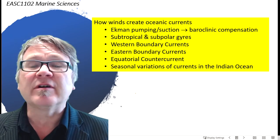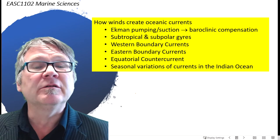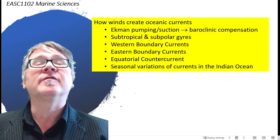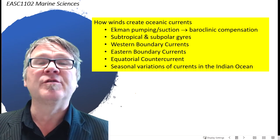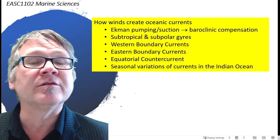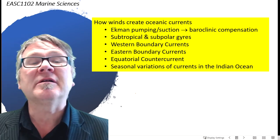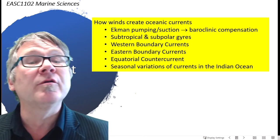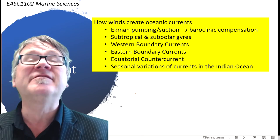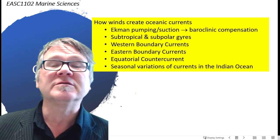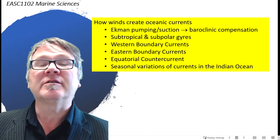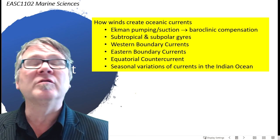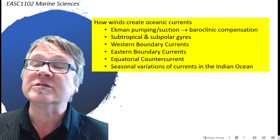And then you learn about the structure and some special features — the names of the largest circulation patterns on Earth: subtropical and subpolar gyres, western boundary currents, eastern boundary currents, equatorial counter currents, and seasonal variations of currents in the Indian Ocean.